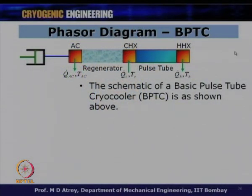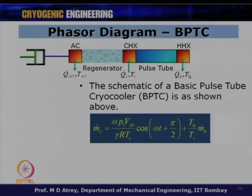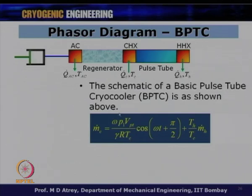For the BPTC phasor diagram — note we are drawing the diagram only for the pulse tube, not the entire cryocooler. In BPTC, ṁ_H = 0 because there is no orifice. The expression for ṁ_C = (TH/TC)·ṁ_H + [vertical vector] reduces to only the vertical vector term, since the first part (TH/TC)·ṁ_H vanishes. So ṁ_C lies entirely at 90 degrees to the pressure axis.